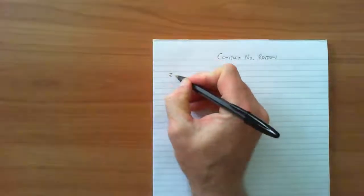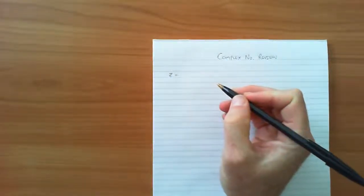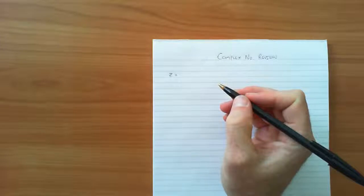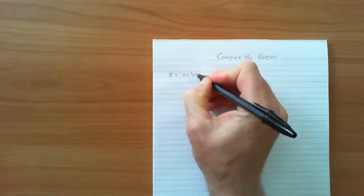The purpose of this lesson is to revise the basics of complex numbers. A complex number is often given the name Z. Z equals A plus BI is the standard form of a complex number.